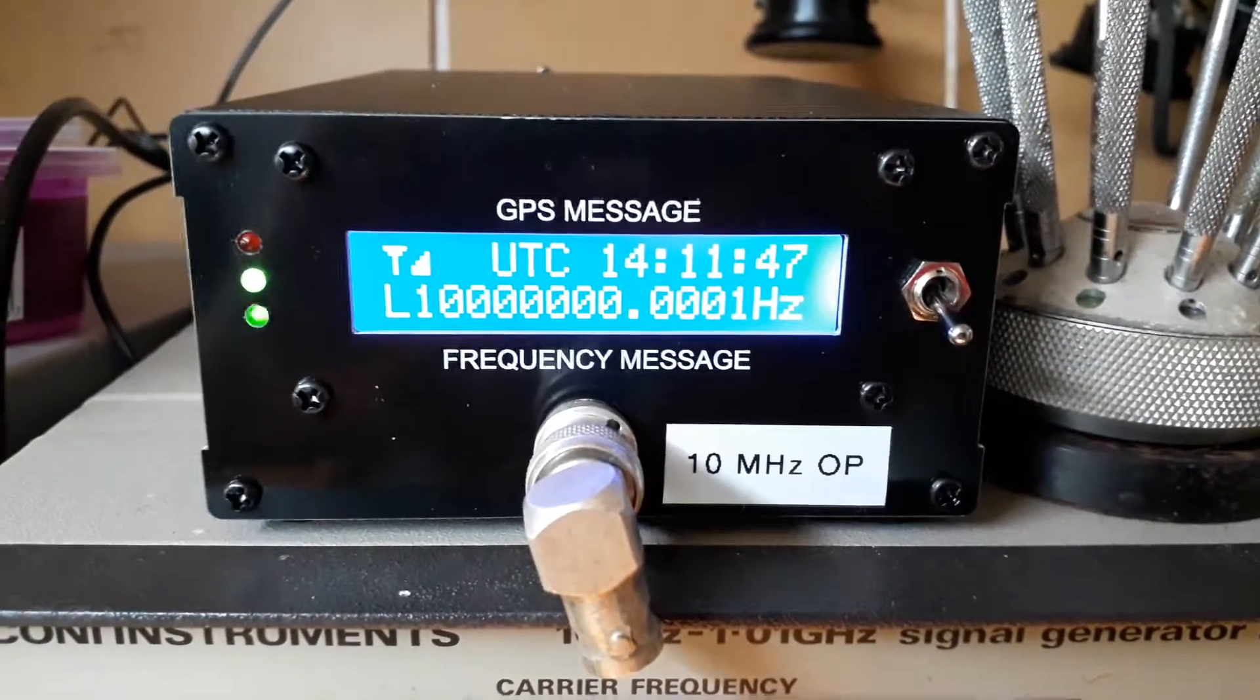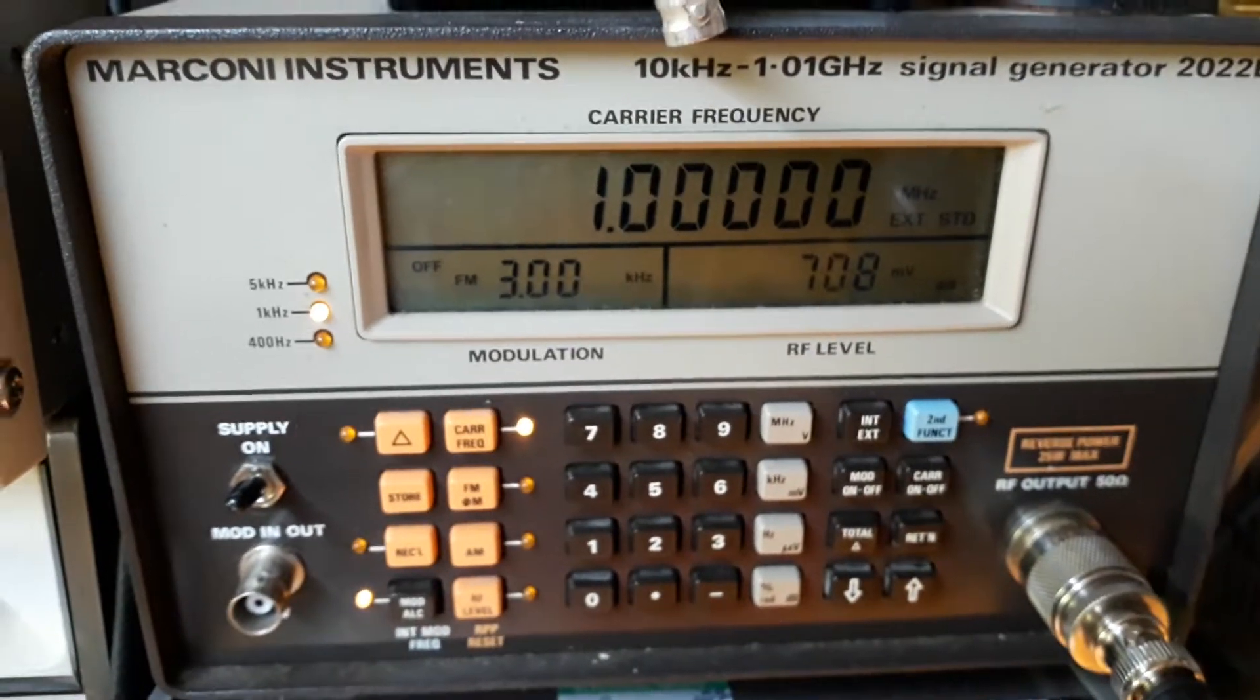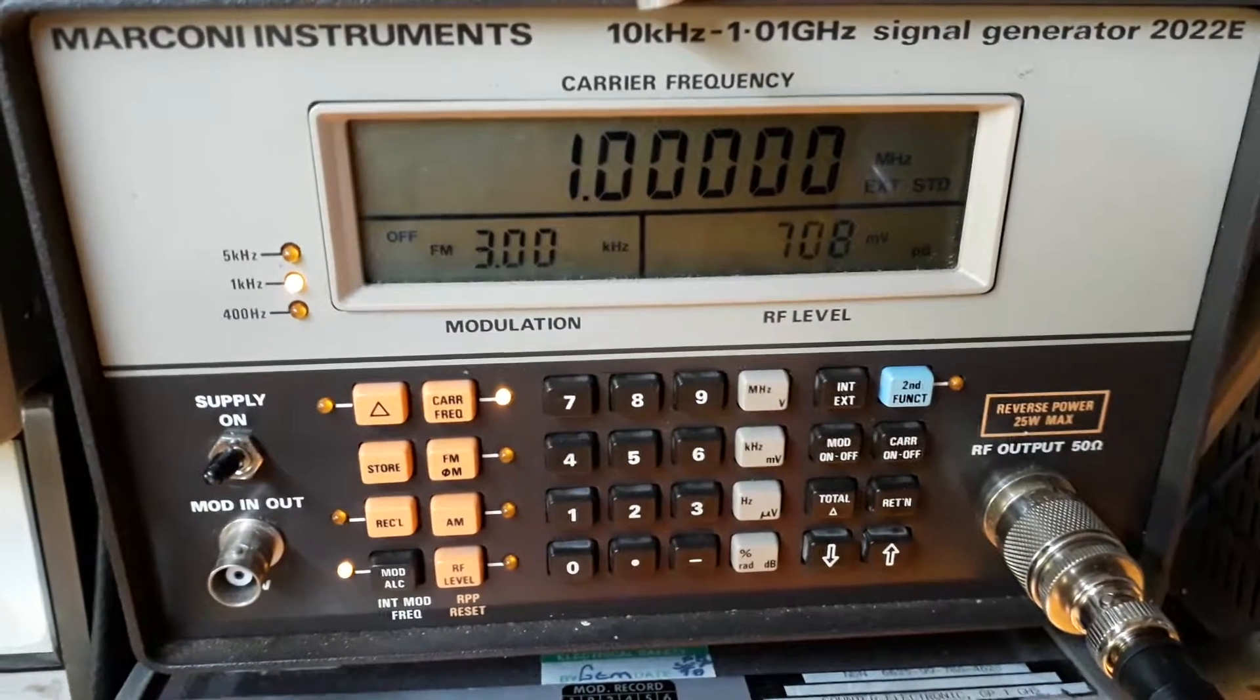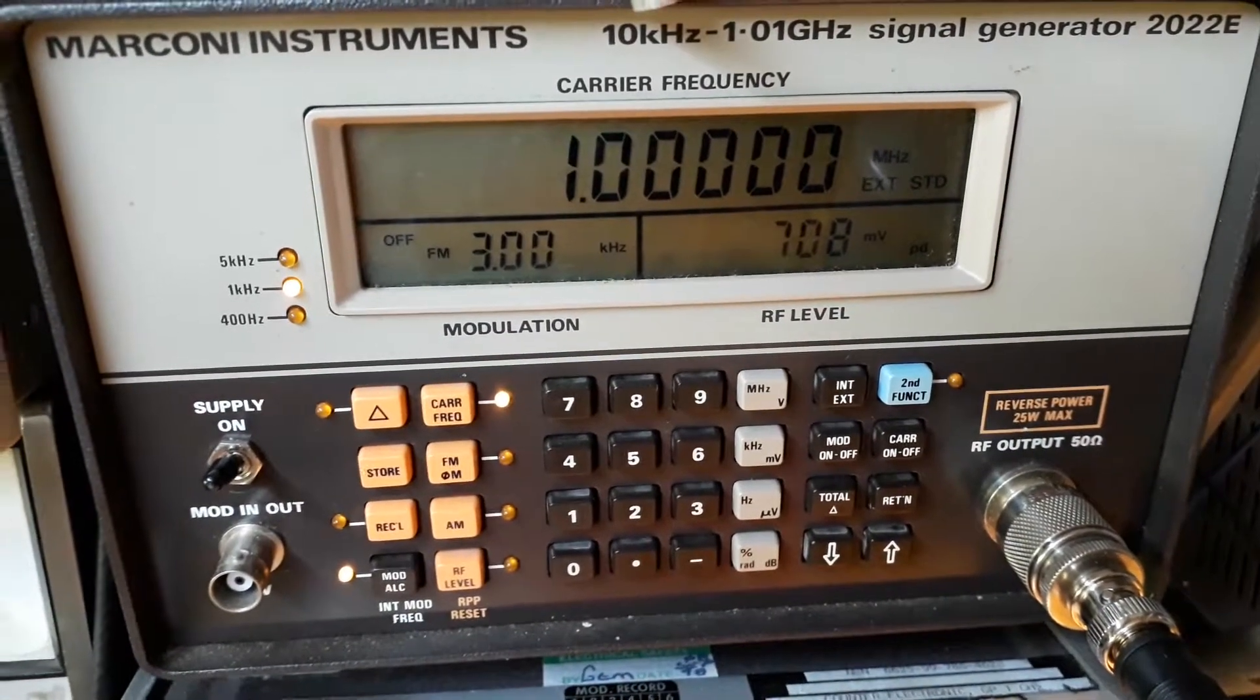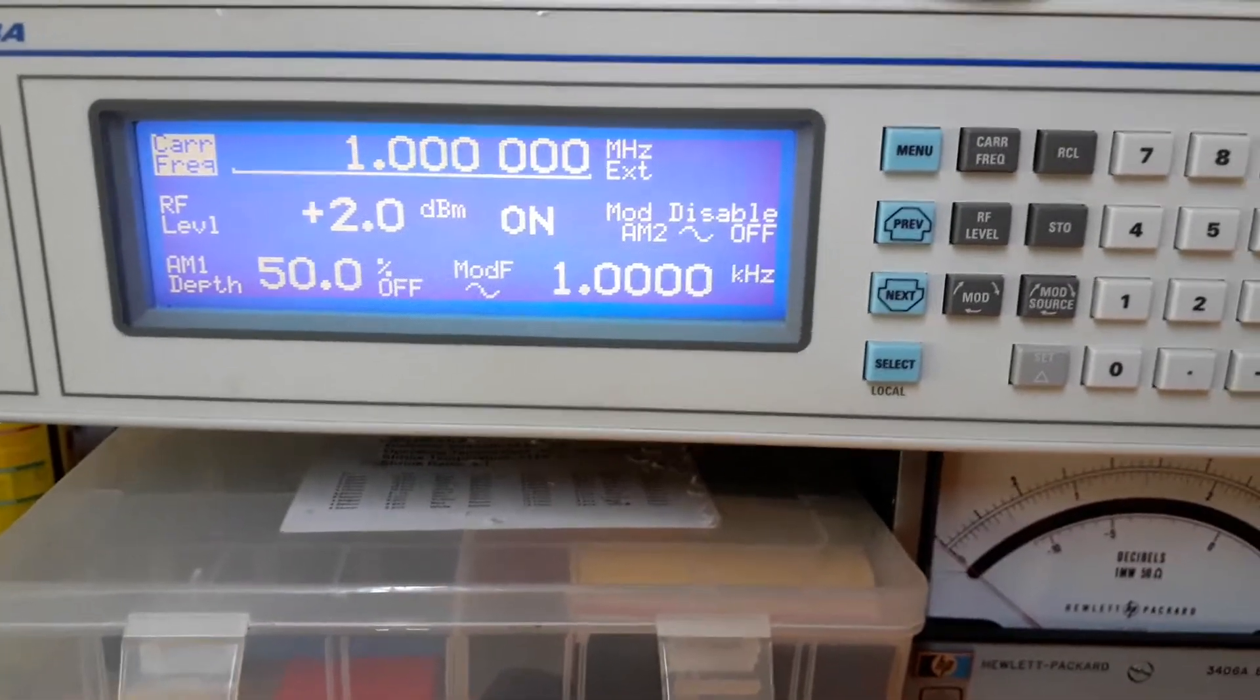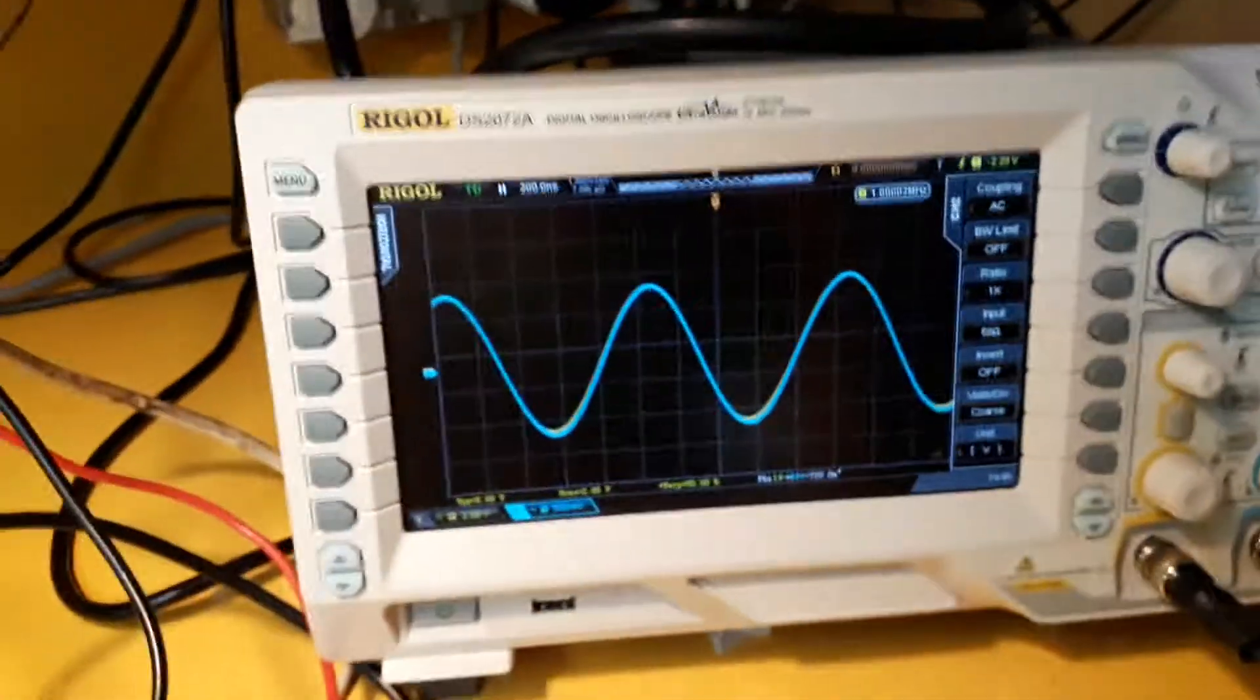But anyway, that's beside the point. So what I'm doing in this experiment, I've got two RF generators running. I've got the Marconi 2022 set to 1MHz, and that's getting its external reference from my off-air standard. And I'm using the other RF generator, the Marconi 2024, and that's getting its external standard from the GPSDO. And I'm displaying the outputs on the oscilloscope over here.